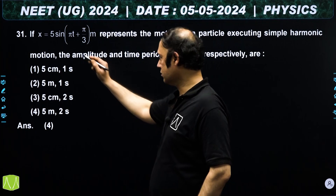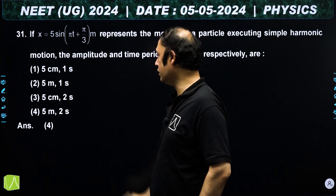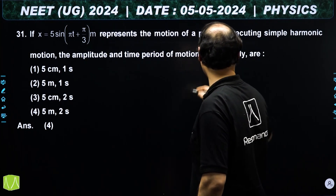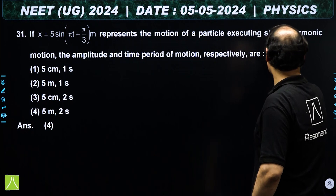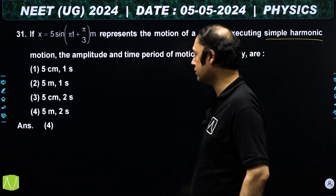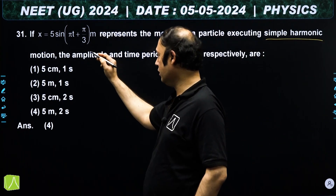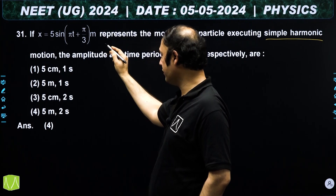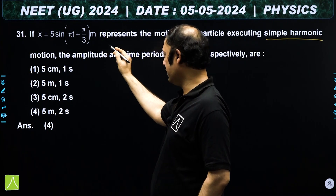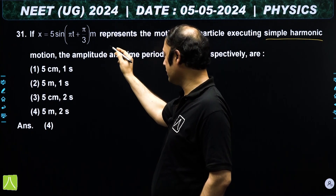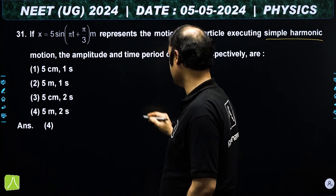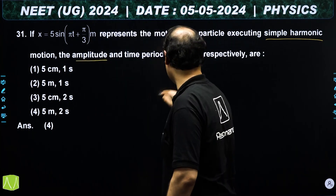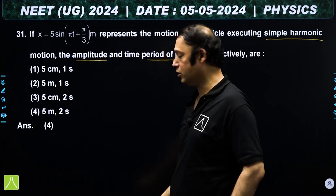Let's look at question number 31. We are given a simple harmonic particle with position as a function of time: x = 5 sin(πt + π/3). We need to find the amplitude and time period.